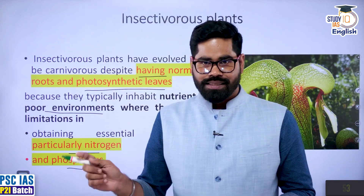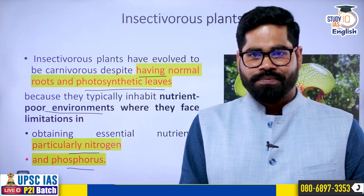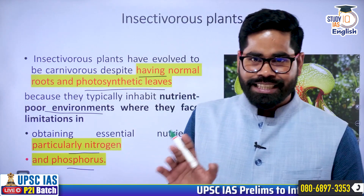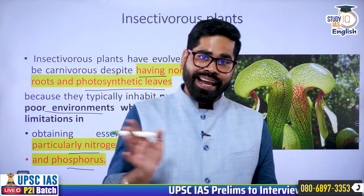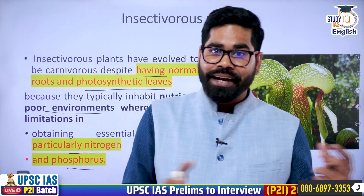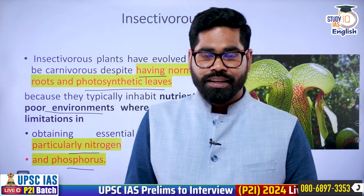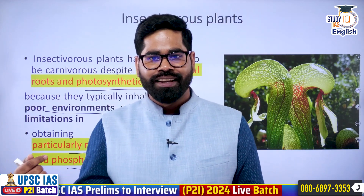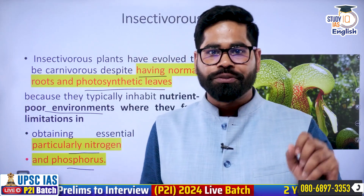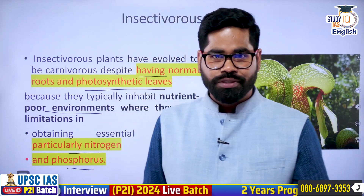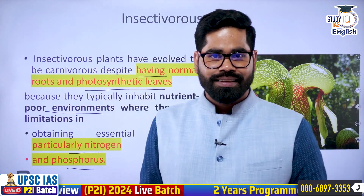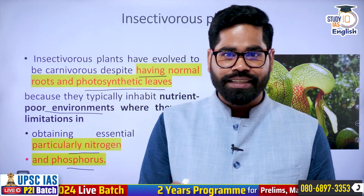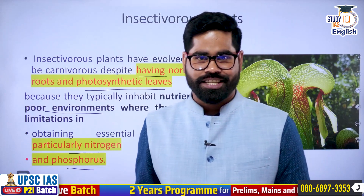One thing to keep in mind clearly: insectivorous plants don't just depend on insects for their food. They are photosynthetic plants that derive nutrients from the soil, but the soil is poor in nutrients — it is not having nitrogen and not having phosphorus. They need these nutrients and for getting them, they have got a unique adaptation.